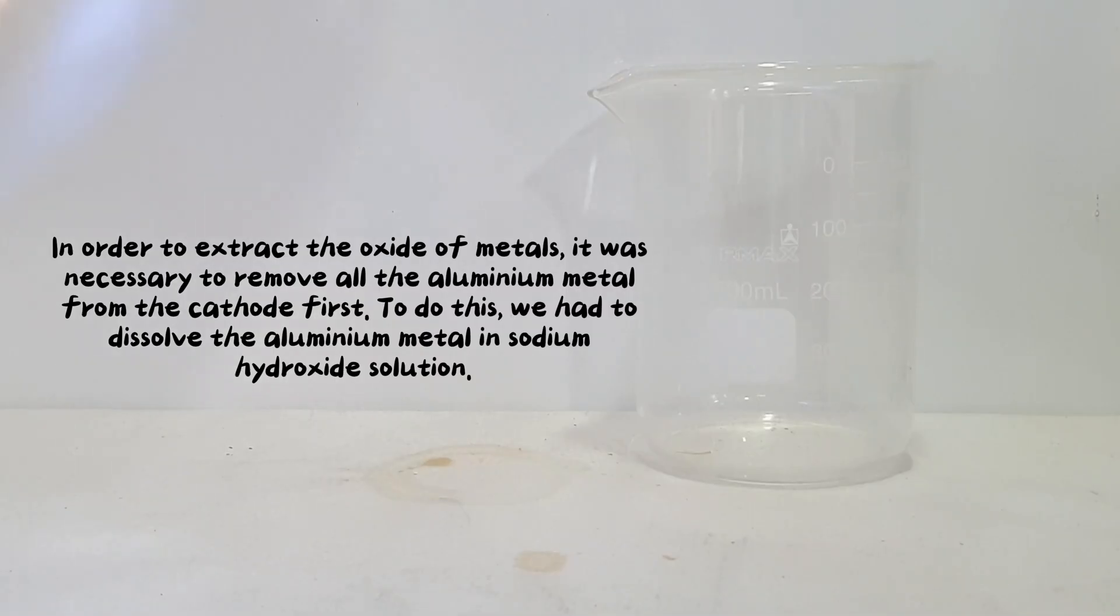In order to extract the oxide of metals, it was necessary to remove all the aluminum metal from the cathode first. To do this, we had to dissolve the aluminum metal in sodium hydroxide.